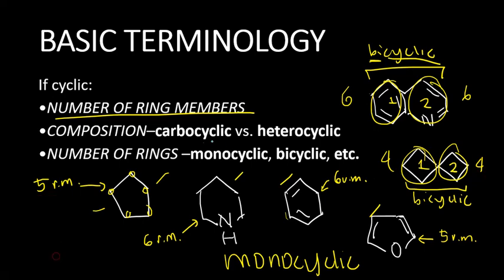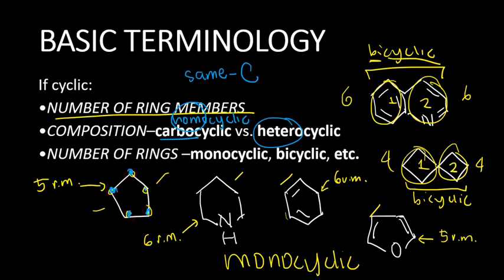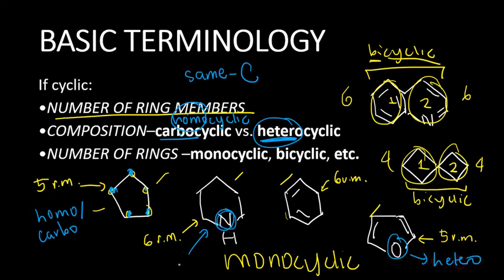Another thing we need to know are the words carbocyclic and heterocyclic. Carbocyclic can also be called homocyclic, especially when we compare the prefix homo to hetero. Homo means same — meaning all the ring atoms are the same atom, in this case carbon. So if all ring atoms are carbon, that is homocyclic, or since they are all carbon, you can also call this carbocyclic. How about when there's nitrogen in the ring? Nitrogen is not carbon — that's different, hetero. So the moment you have an atom inside the ring that is not carbon, like nitrogen or oxygen, you call this a heterocyclic compound.